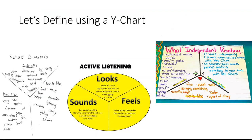Examples of Y-charts in use include natural disasters, active listening, and what independent reading looks like, sounds like, and feels like. The active listening chart is something you could brainstorm with students prior to their activity. This is a brainstorming activity in which students write about the topic across all three sections of the Y.